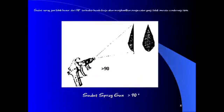Selanjutnya sudut spray gun lebih besar dari 90 derajat terhadap benda kerja akan menghasilkan pengecatan yang tidak merata dan cenderung tipis. Seperti spray gun yang mendongak ke atas, seperti terlihat pada gambar.